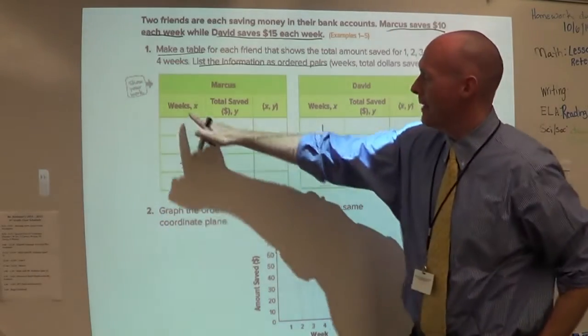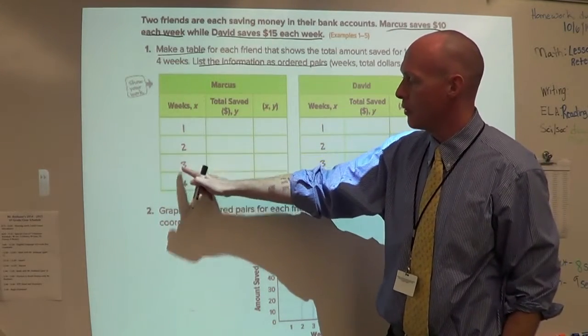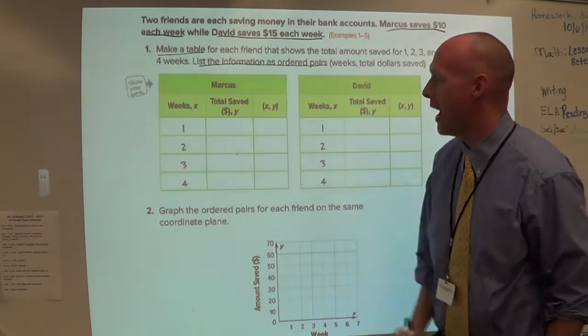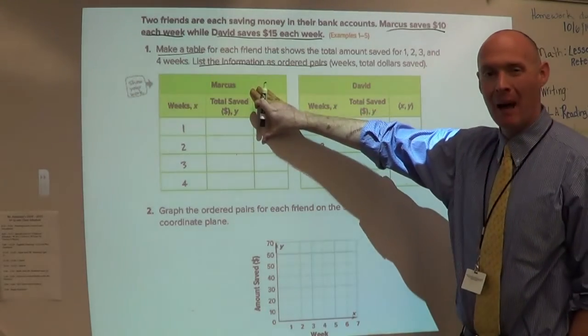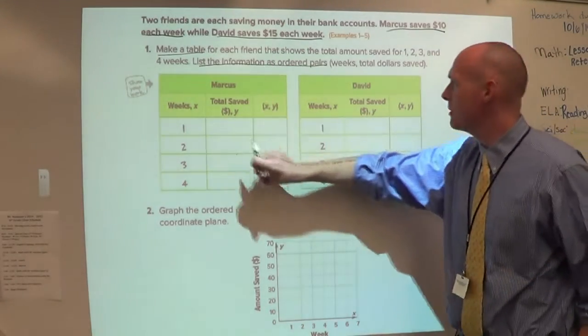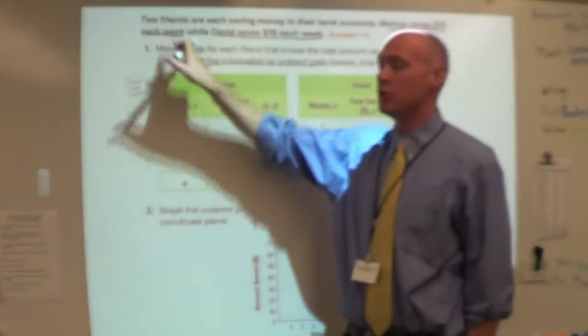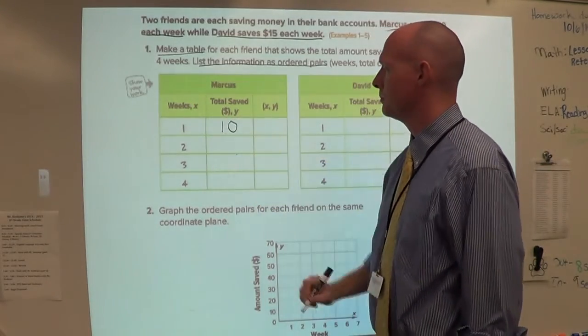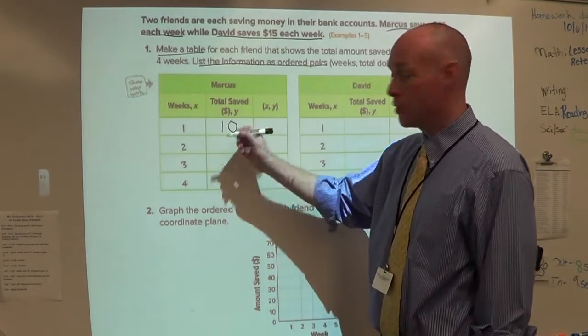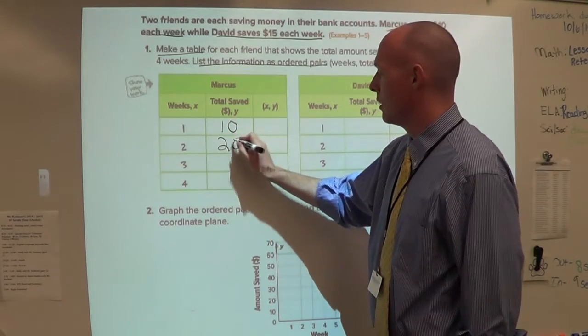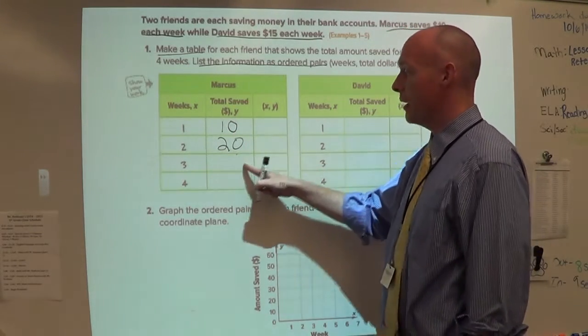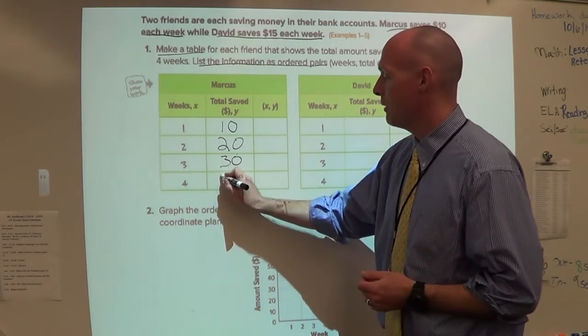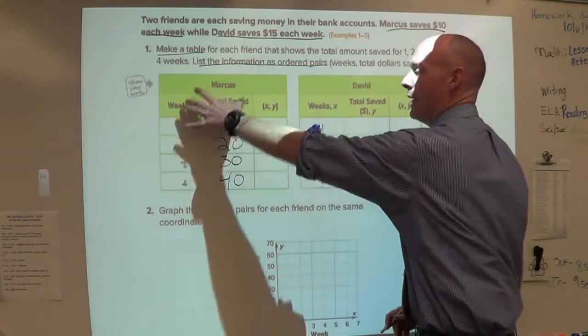Let's look at Marcus first. Here's my weeks, which is x: one week, two week, three week, four week. Then it says total saved in dollars, which is y. How much does Marcus make? We got to refer back to the question. Marcus saves $10 each week. So week one, he would save $10. Week two, he would save $20. Notice it just goes up 10. Week three, we go up 10 again to get $30. Week four, we go up 10 for $40.